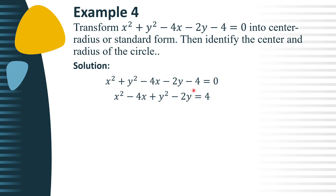Then, transpose negative 4 to the right side of the equation. So, negative 4, we have positive 4.